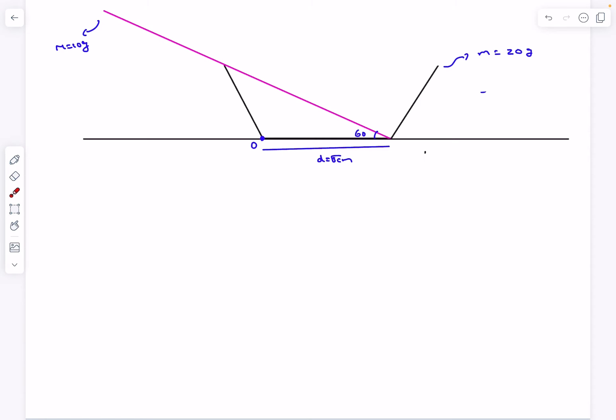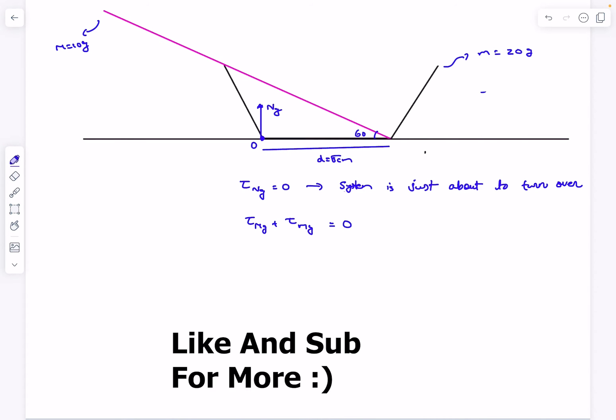The other forces are the normal from the ground, the weight of the rod, and the weight of the container. We're interested in the situation when the container is just about to topple. We know that the normal reaction from the ground will shift to point O when it's just about to topple, so the torque due to ground normal will become zero. So at the end, all we have to ensure is torque due to Mg plus torque due to small mg must equal zero.